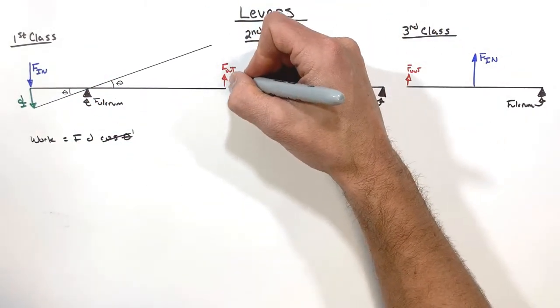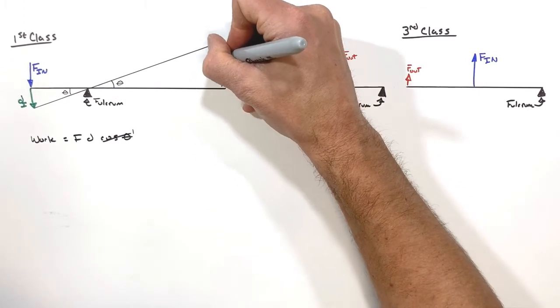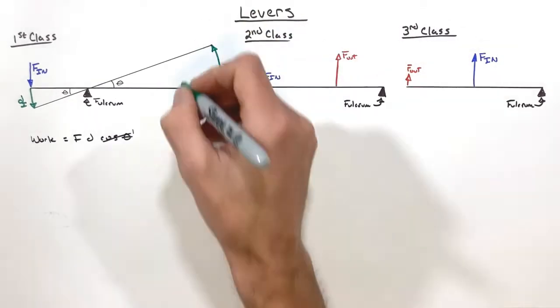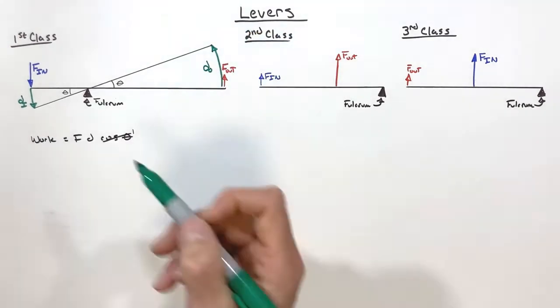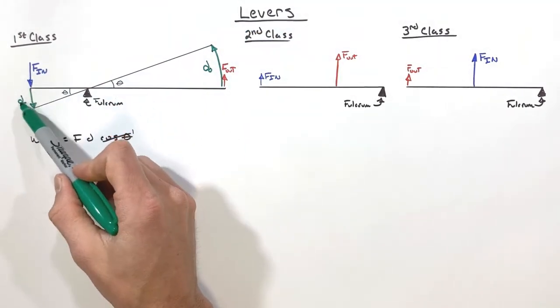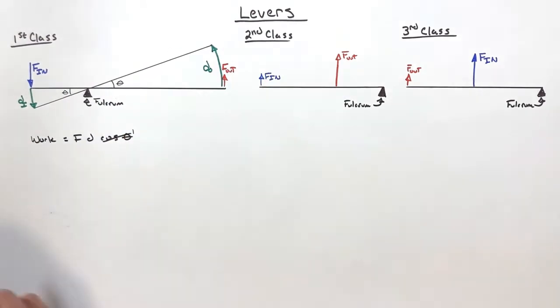As a result, there's an output force on the other end of the lever which is going to act over some displacement. So we've got force times displacement in, force times displacement out.